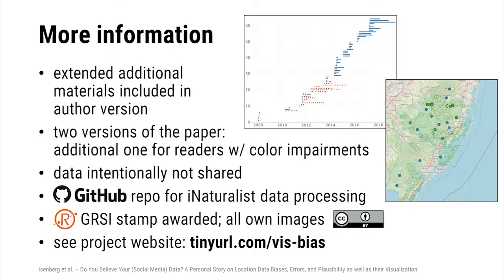Our paper has a lot of additional material — including a version for readers with color impairments. We do not share the data intentionally to protect the plants. However, there is a GitHub repository for the iNaturalist data scripts if you're interested. The paper also received the GRSI replicability stamp, and all images are CC BY.